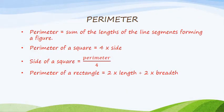Children, we have learned earlier what we mean by Perimeter. In this video lesson let us revise once again what we mean by Perimeter. Perimeter is equal to the sum of the lengths of the line segments forming a figure, or we can say it is the total length of the boundary of a closed figure.